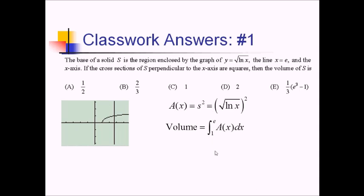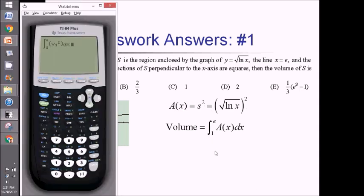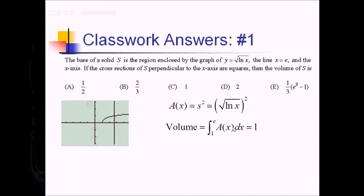Let me use the calculator for this. The fastest way is to do math 9, enter 1 to e for the integral, then put alpha trace y1 squared and a dx. That comes out to exactly 1. So that's choice C.